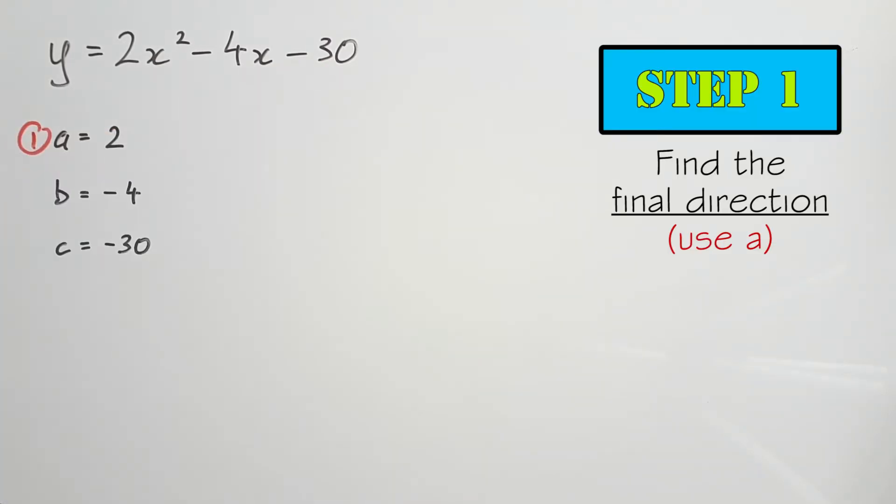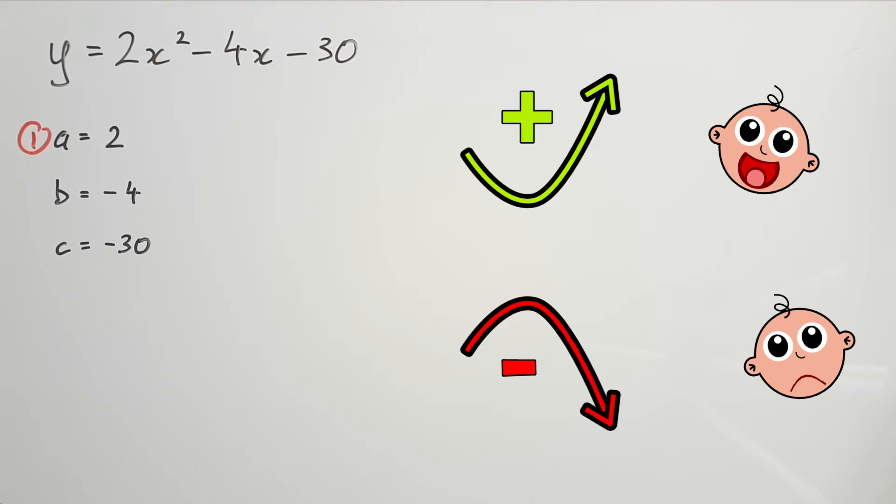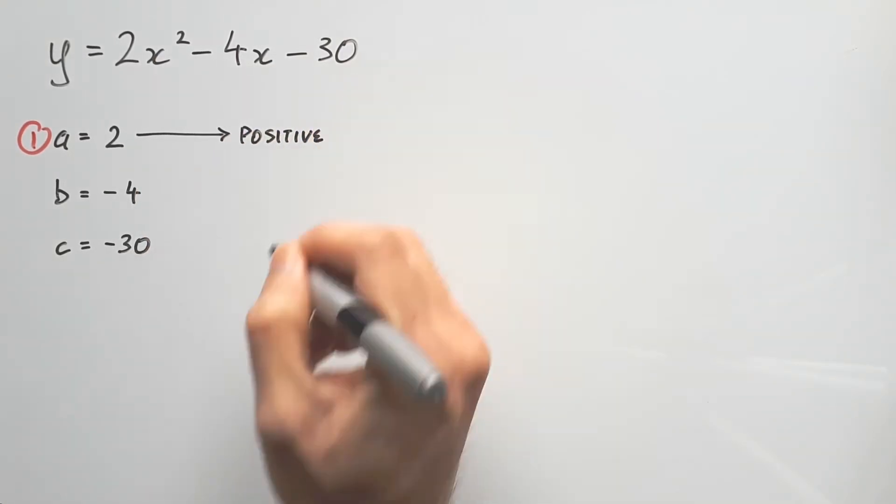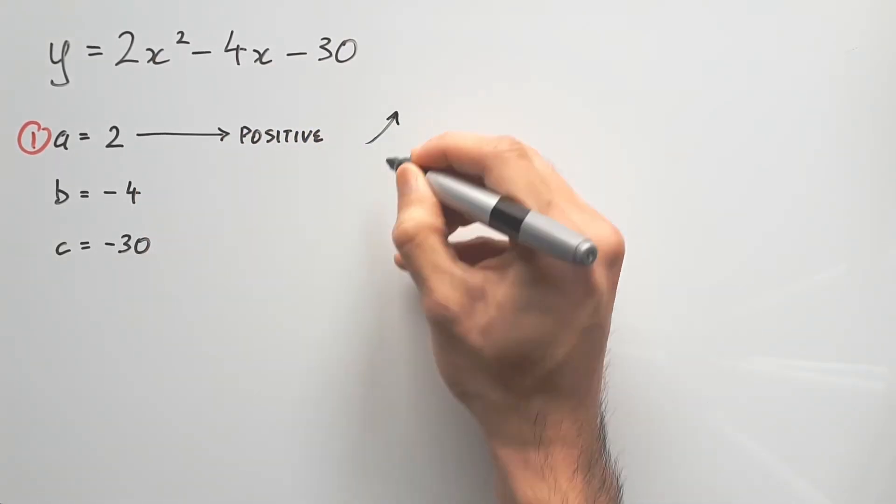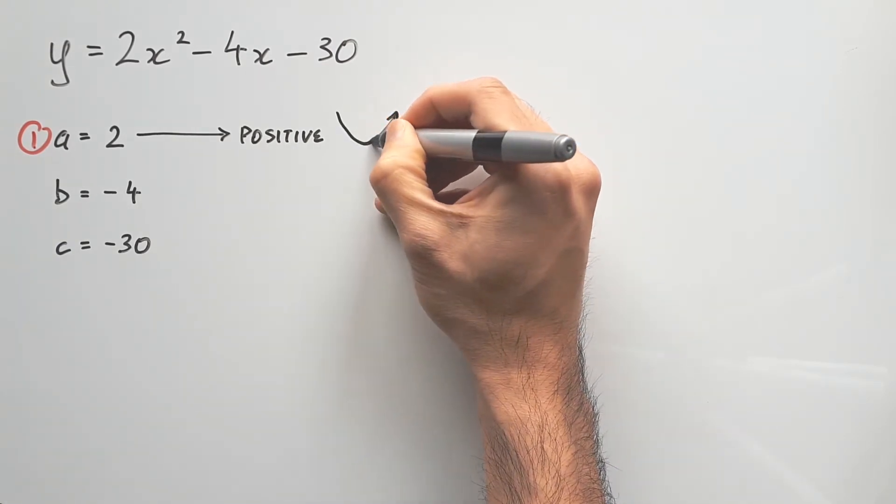Step 1: Get the final direction from the a value. When it's positive, the graph finishes up. When it's negative, it finishes down. This a is positive 2, so it will have an upward stroke at the end. So we can expect to see a smiley face once we draw it out.